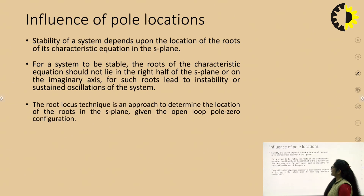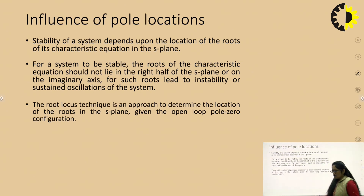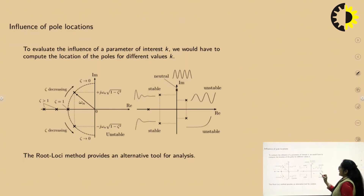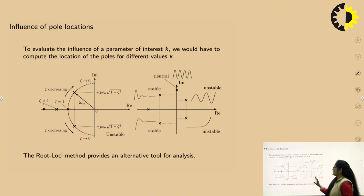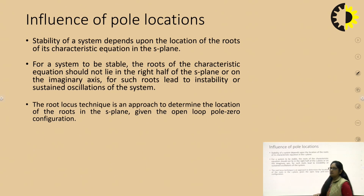What is the influence of pole locations in terms of stability? Stability of a system depends on the location of the roots of the characteristic equation in the S-plane. If the roots of the characteristic equation are on the left half of the S-plane, then the system is stable. If the roots are on the right half of the S-plane, then the system is unstable. For a system to be stable, the roots of the characteristic equation should not lie on the right half of the S-plane or on the imaginary axis.